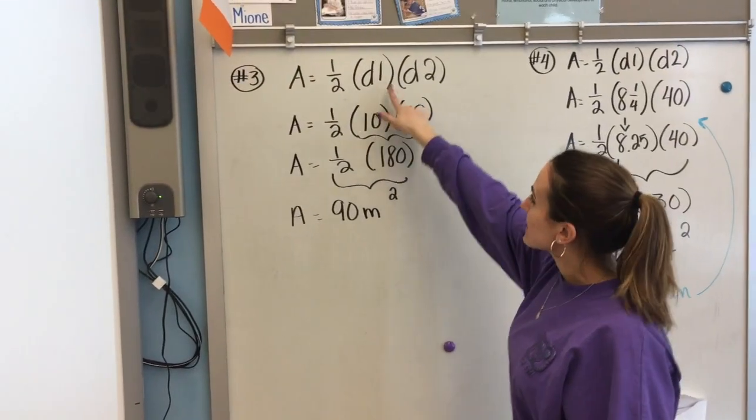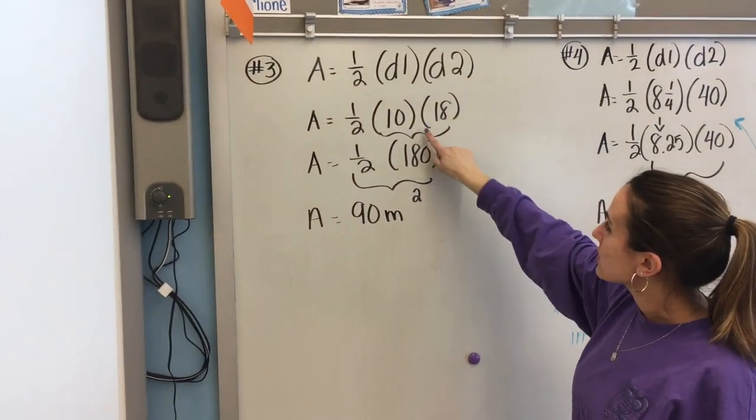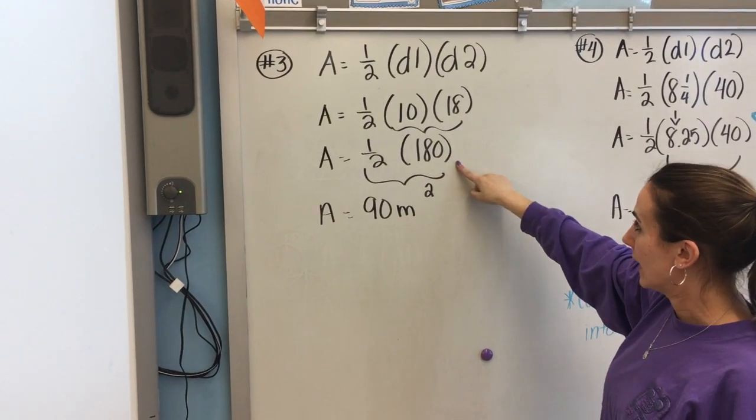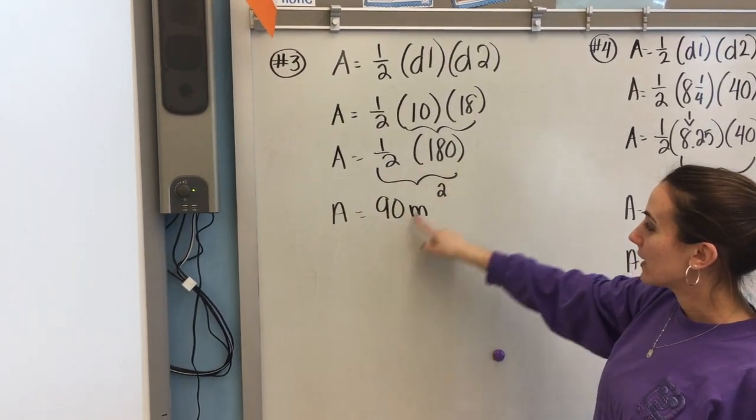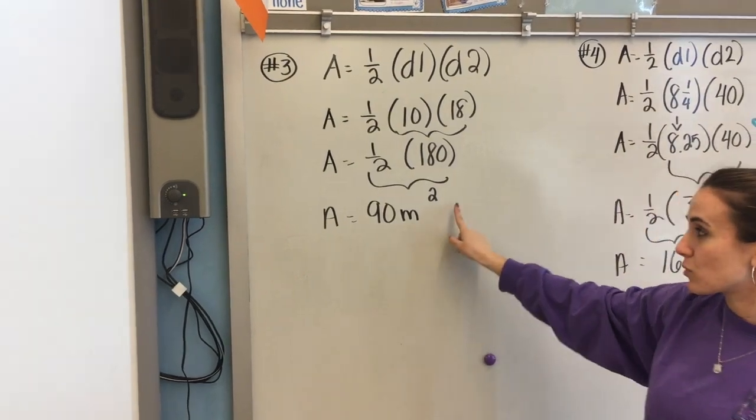Now here we have number 3. I did this part. I plugged in my 10 and my 18. I multiplied 10 and 18 and got 180. Half of 180 is 90 and my final answer is 90 meters squared.